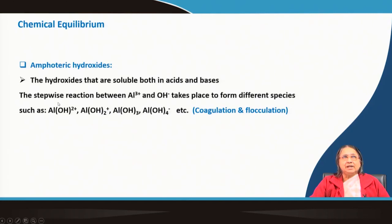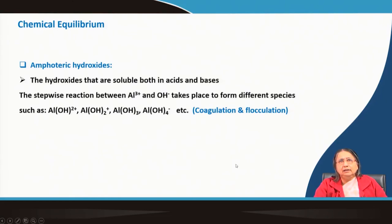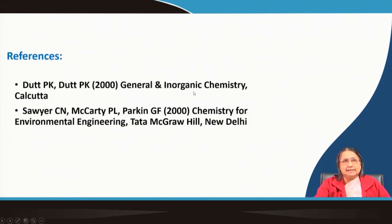Amphoteric hydroxides such as aluminum hydroxide and iron hydroxide form different aqua or hydroxide complexes depending on pH. This is applied in coagulation-flocculation using alum, where these equilibria — and the concentration of different species as a function of pH — are important for turbidity removal. The recommended references are Peavy, Rowe, and Tchobanoglous, along with other relevant textbooks. Thank you very much.